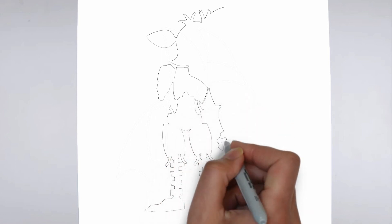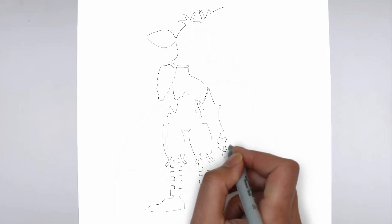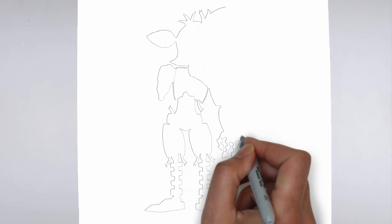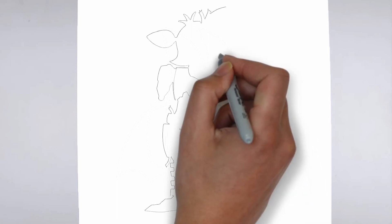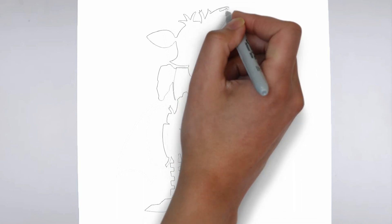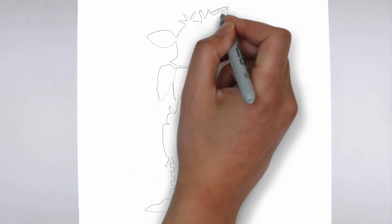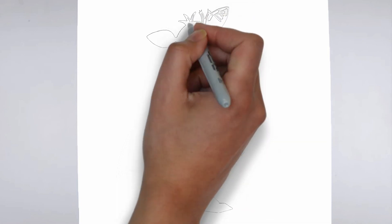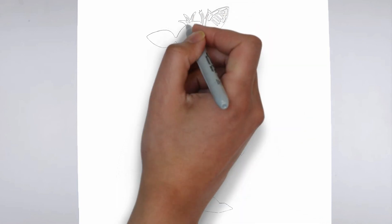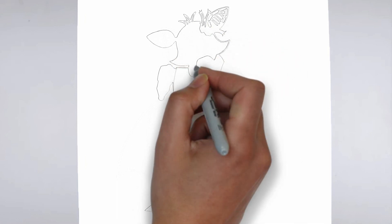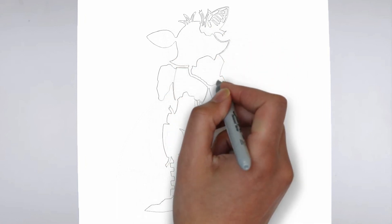Next, we'll start to add some details. Using darker, more defined lines, begin to add in the features of your subject. Pay close attention to the reference image or object you're drawing from and take your time to get the details just right.